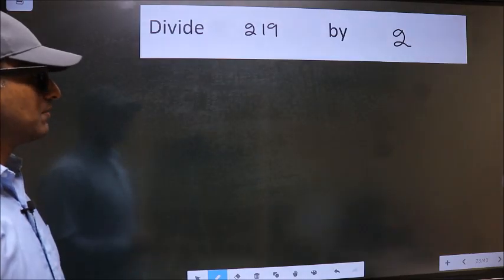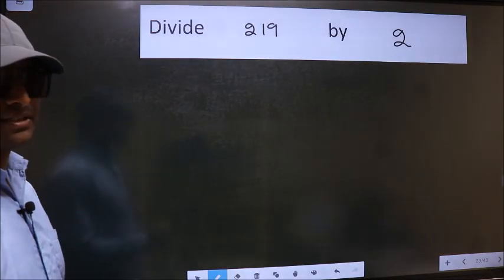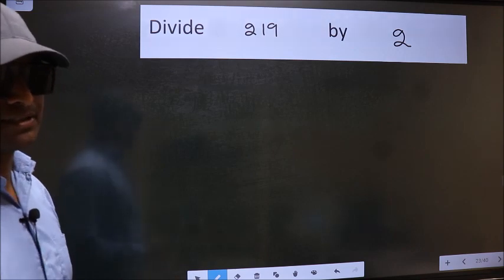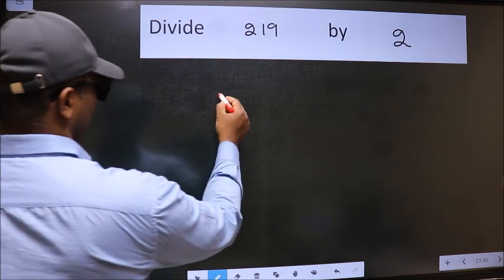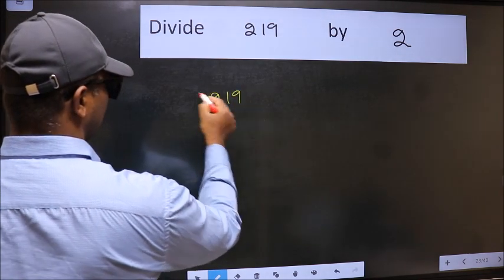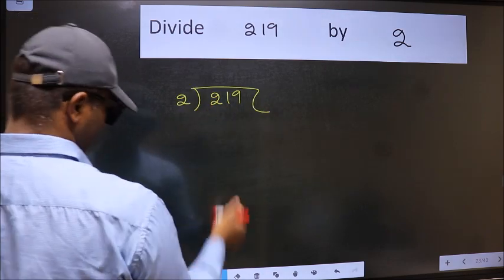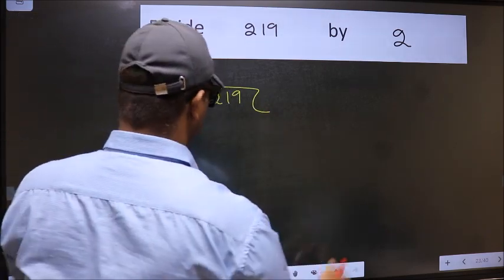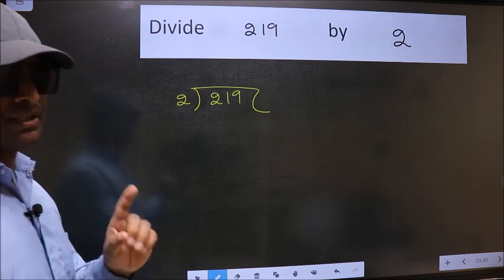Divide 219 by 2. To divide this we should frame it in this way. 219 and 2 here. This is your step 1.